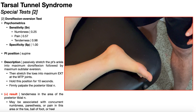The second special test for tarsal tunnel syndrome is the dorsiflexion eversion test, which has much stronger psychometric properties than Tinel's sign. Its specificity is 100%, so if you have a positive result on this test — which is tenderness in the area of the posterior tibial nerve — there's pretty much a 100% chance that the person has tarsal tunnel syndrome. Very strong specificity; it can't get any better than that.